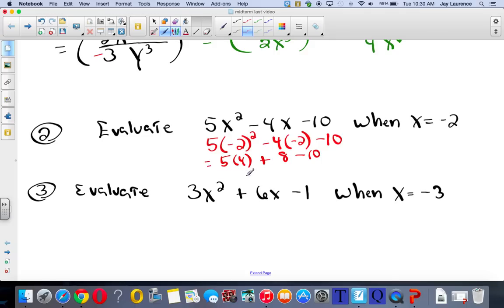This is negative 4 times negative 2, which is a positive 8 minus a 10. Okay. One more step, multiplication. I'll have 20 plus 8 minus 10. 20 plus 8 is 28. Minus 10 is 18, and there you go.